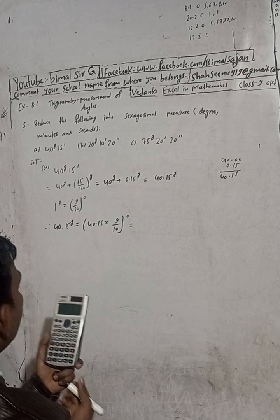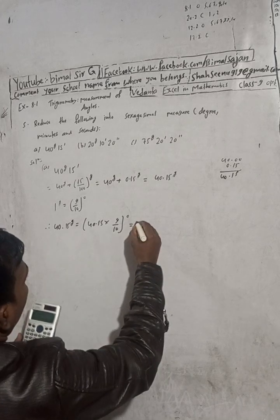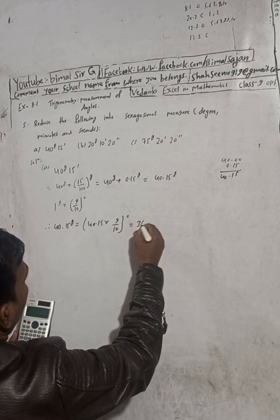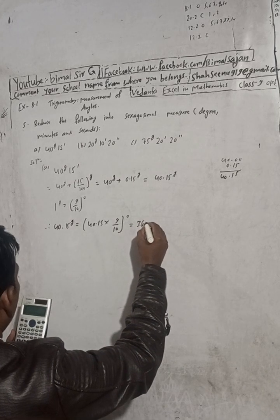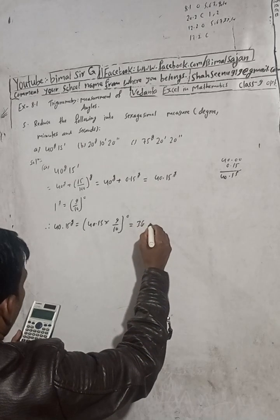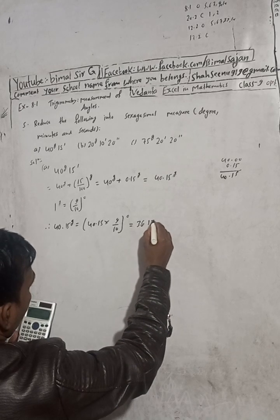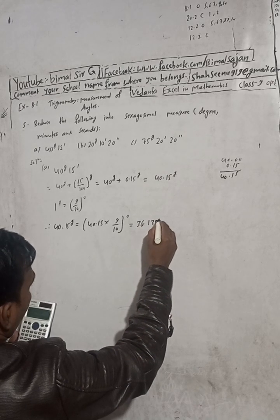40.15 into 9 divided by 10 gives us 36.135.